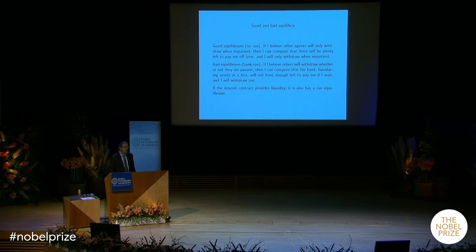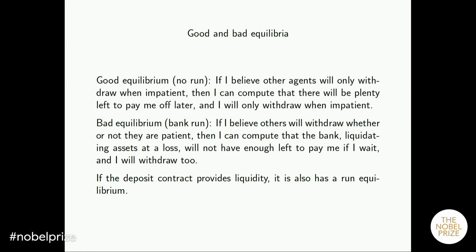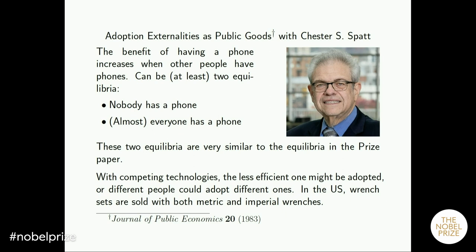To summarize: we talked about the good equilibrium, where people withdraw only when they need the money, and the bad equilibrium, the bank run, where everybody takes their money out whether they need it or not. Now I want to move on to joint papers with other co-authors that also featured multiple equilibria.